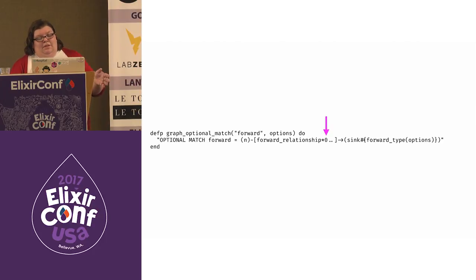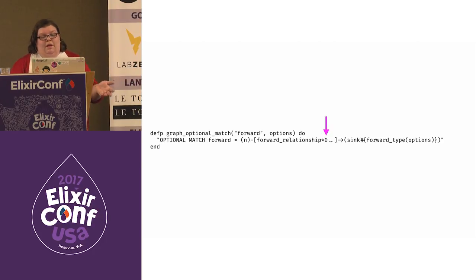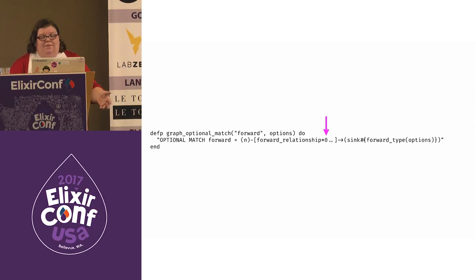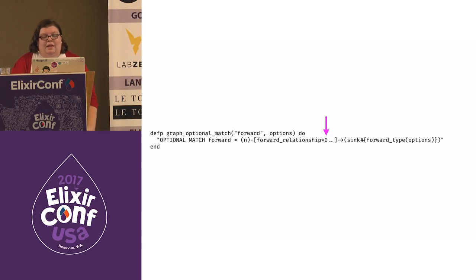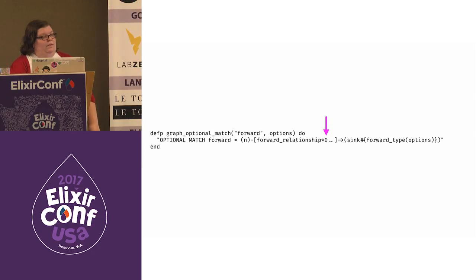I wasn't able to eliminate the duplicate middle node in Cypher when both forward and backward paths are queried, but I was able to work around it using Enum.uniq on the combined list of source and sink nodes.